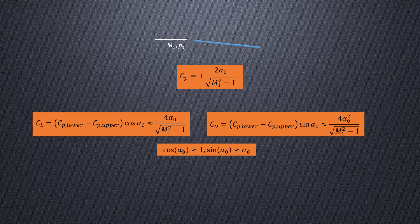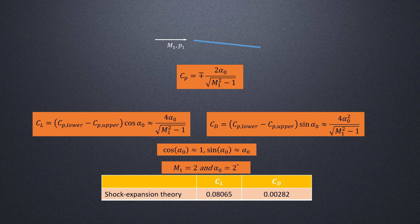Recall that we calculated the CL and CD for a flat plate at an angle of attack of 2 degrees in a supersonic flow at Mach equal to 2 as 0.08065 and 0.00282 respectively.